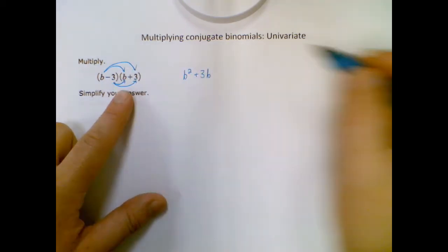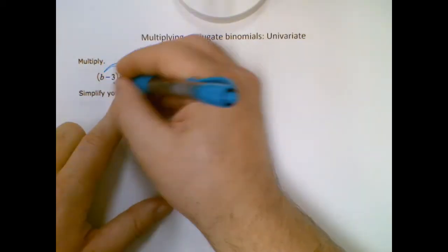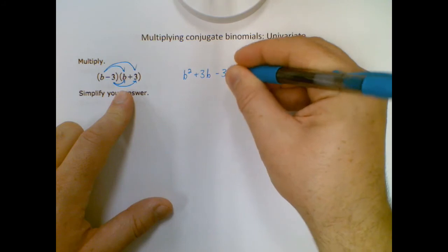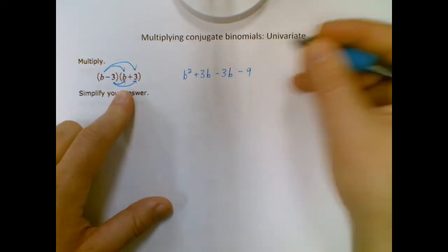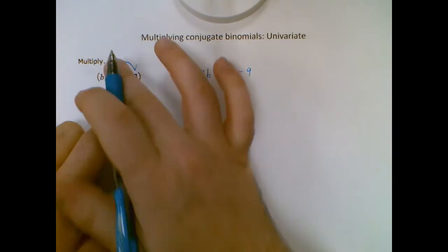Now I have to distribute my second term, which is that negative 3. So negative 3 times B is negative 3B. Negative 3 times 3 is negative 9. So that's all of my distributions.